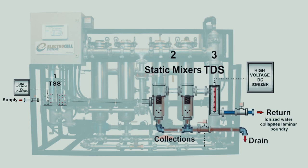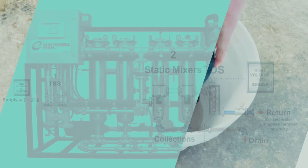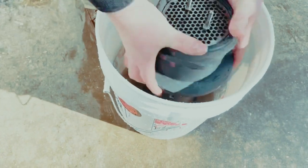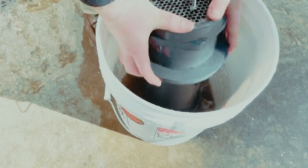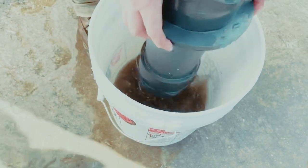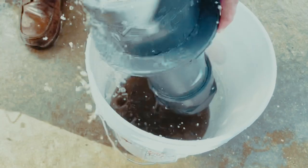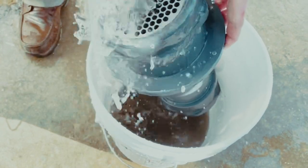Now that we've explained the three-phase process, let's look at a typical result. This is a customer-provided video of debris that was collected from just one static mixer vessel after a 24-hour period. This is what Electrocell has removed from the water flow, allowing the unique performance improvement in open-loop chillers and cooling towers.